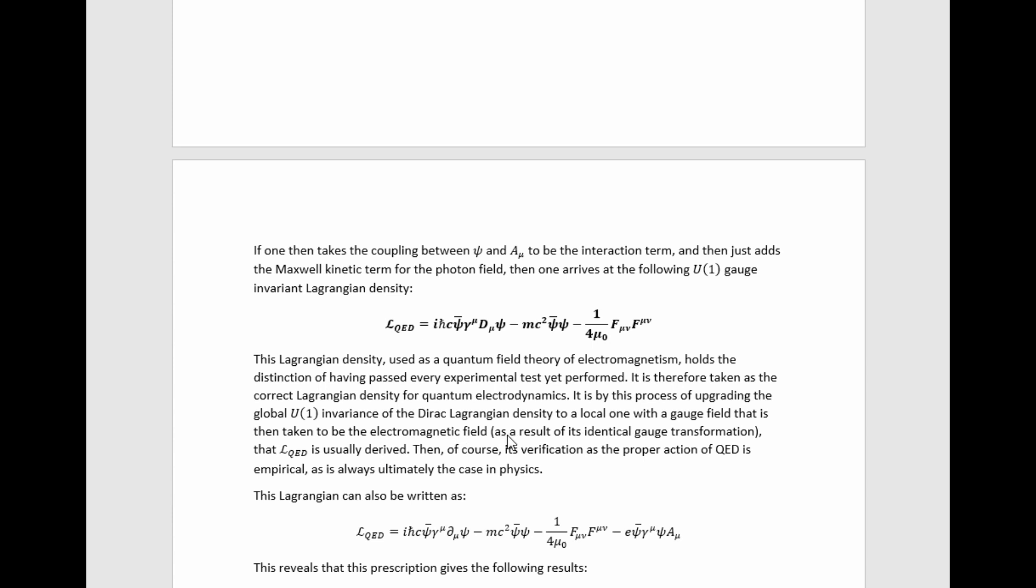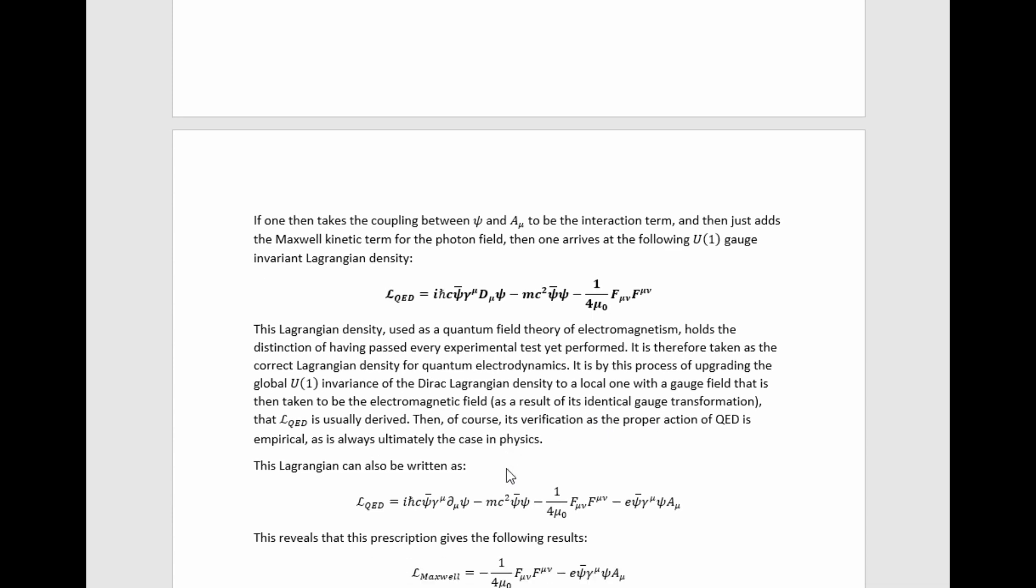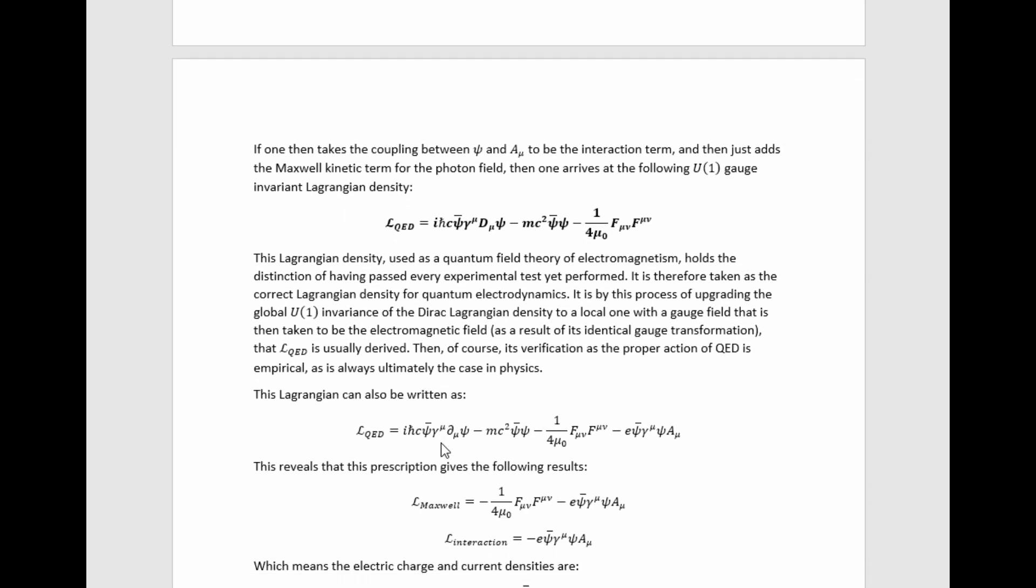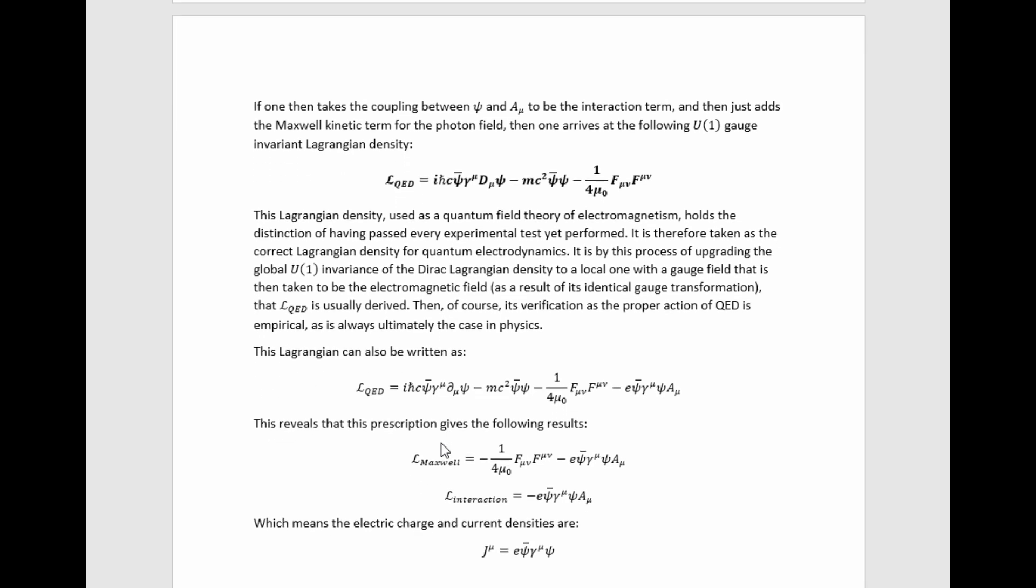Where the gauge field is taken to be the electromagnetic field as a result of its identical gauge transformation properties, then of course its verification as the proper action of quantum electrodynamics is empirical, as is always ultimately the case in physics and any other inherently empirical science.